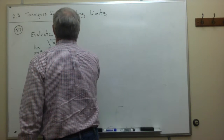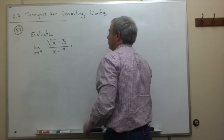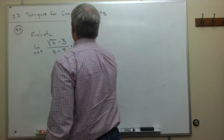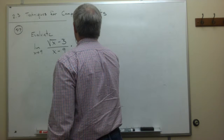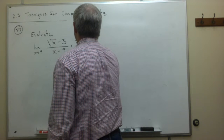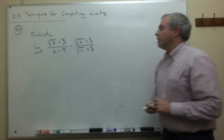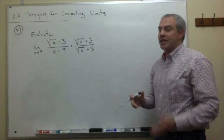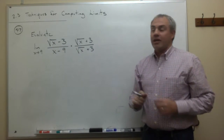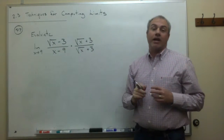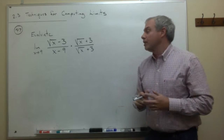So we are going to multiply the top and bottom of this fraction by the conjugate of the top. The conjugate is the square root of x plus 3 divided by the square root of x plus 3. We want to do this because we really want to get rid of that square root of x on the top, and multiplying by the conjugate will allow us to eliminate all the square roots on the top.